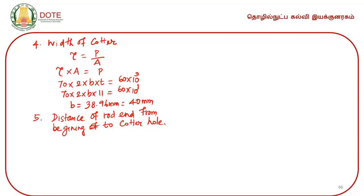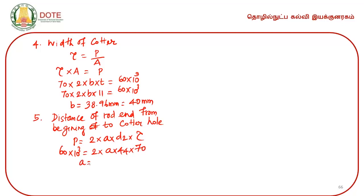Now we calculate the distance 'a' — the distance from the rod end to the cotter hole, based on shear failure of the rod end. Load = 2 × a × D2 × shear stress. So: 60 × 10³ = 2 × a × 44 × 70. Solving, a = 9.74 mm, and we select a = 10 mm.